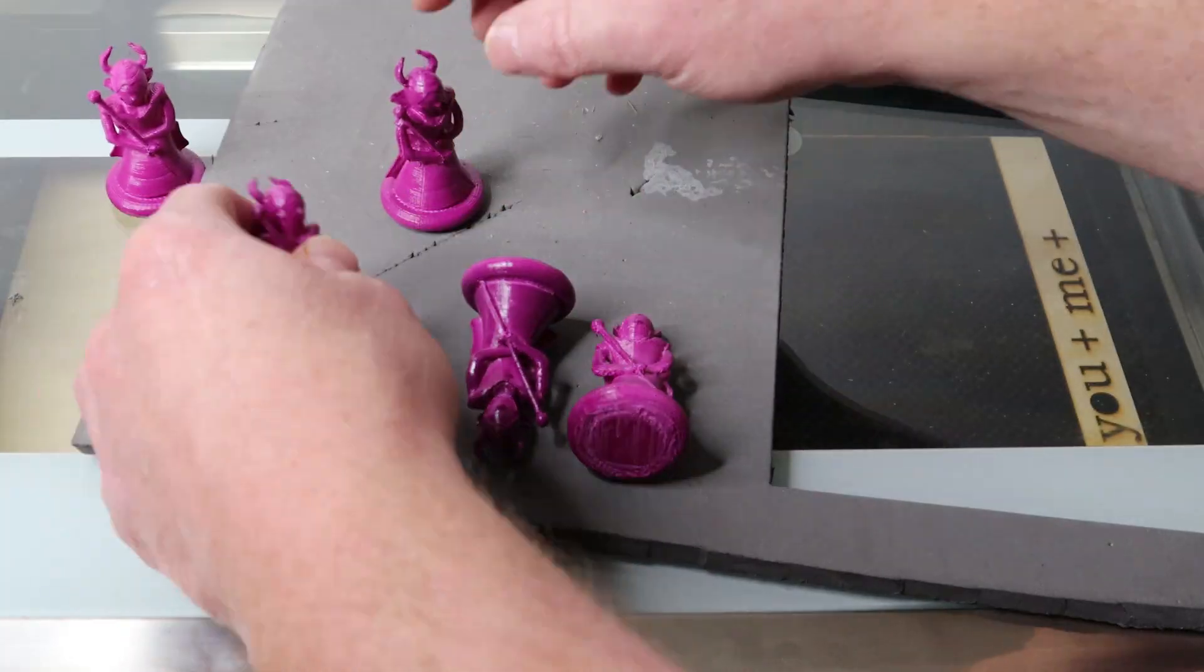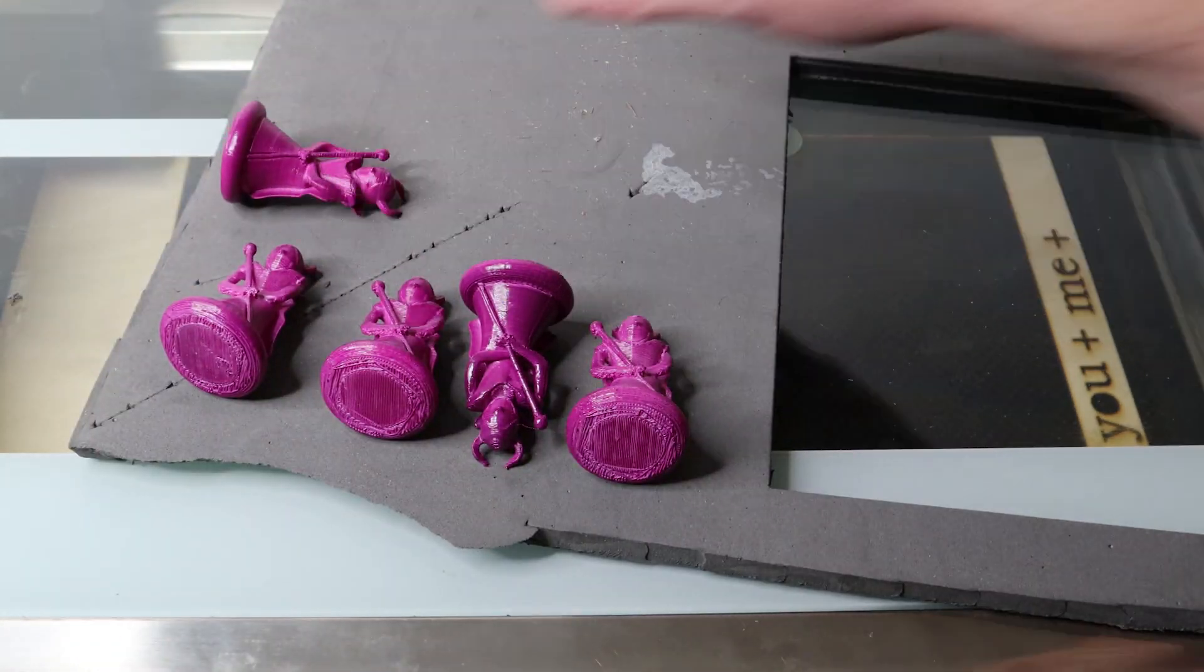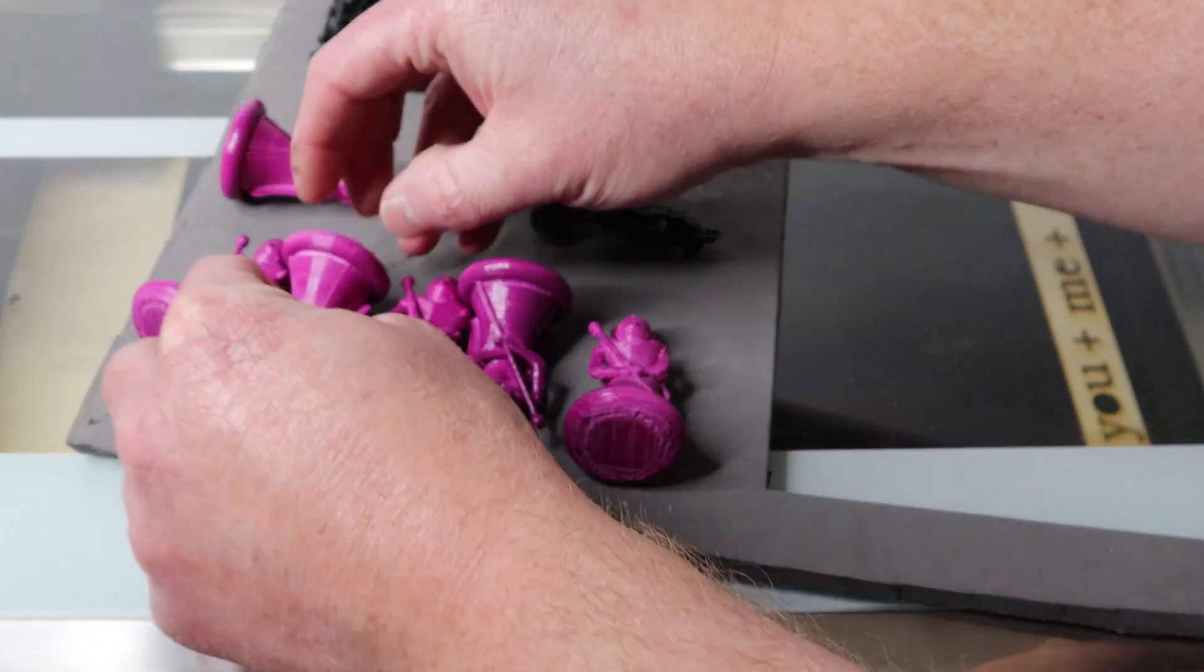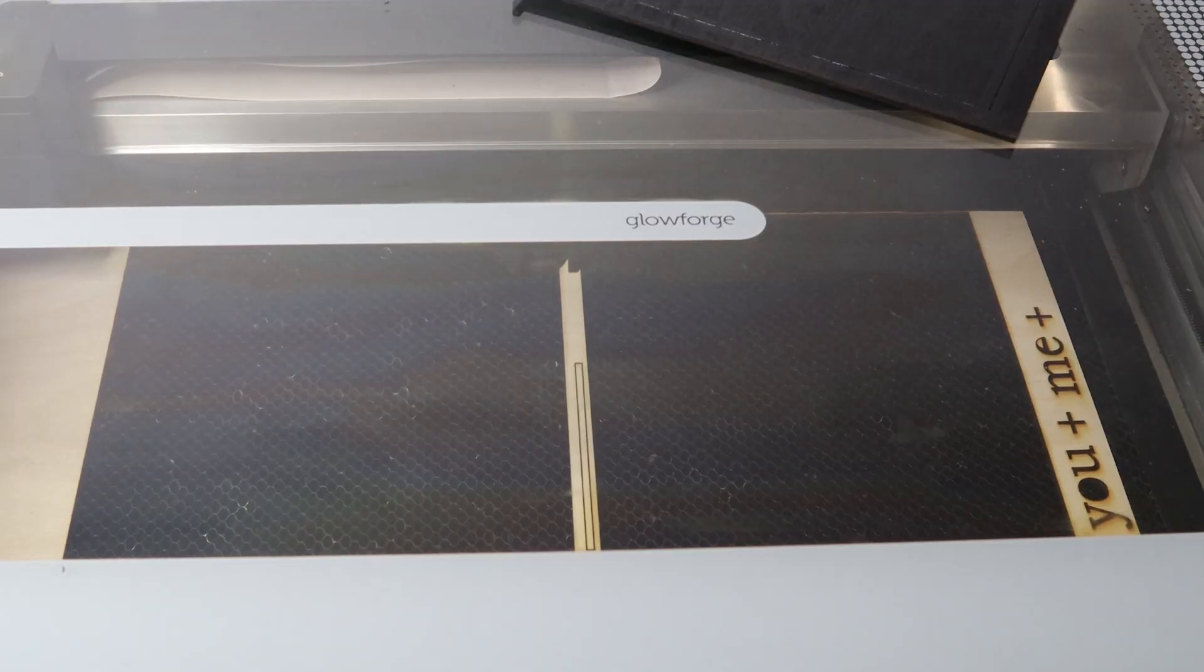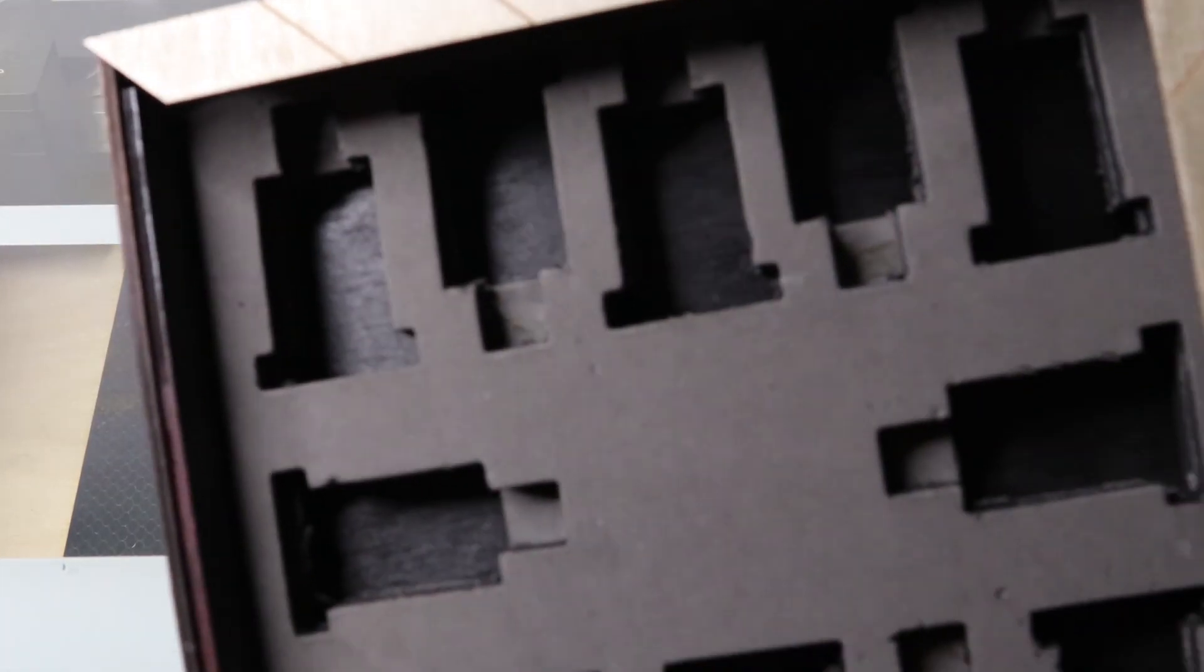The last detail needed is to have a foam insert cut for the inside of the box to hold the pieces. I'm using a piece of EVA foam. I'm just going to laser cut it and it should hold the pieces just fine.